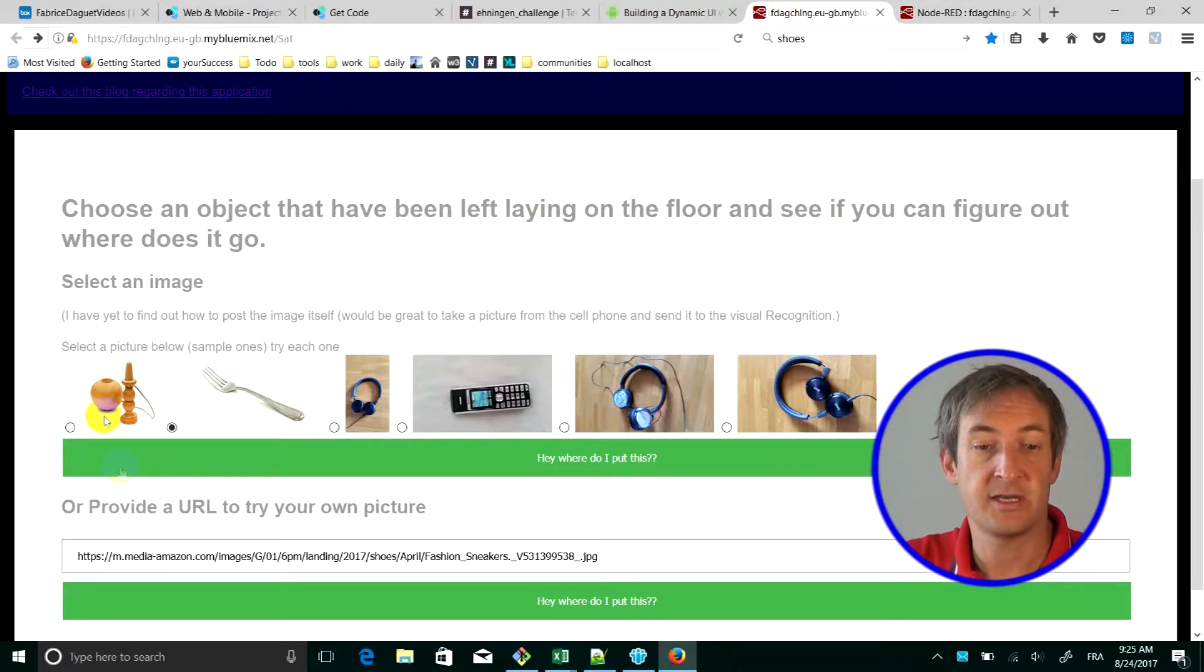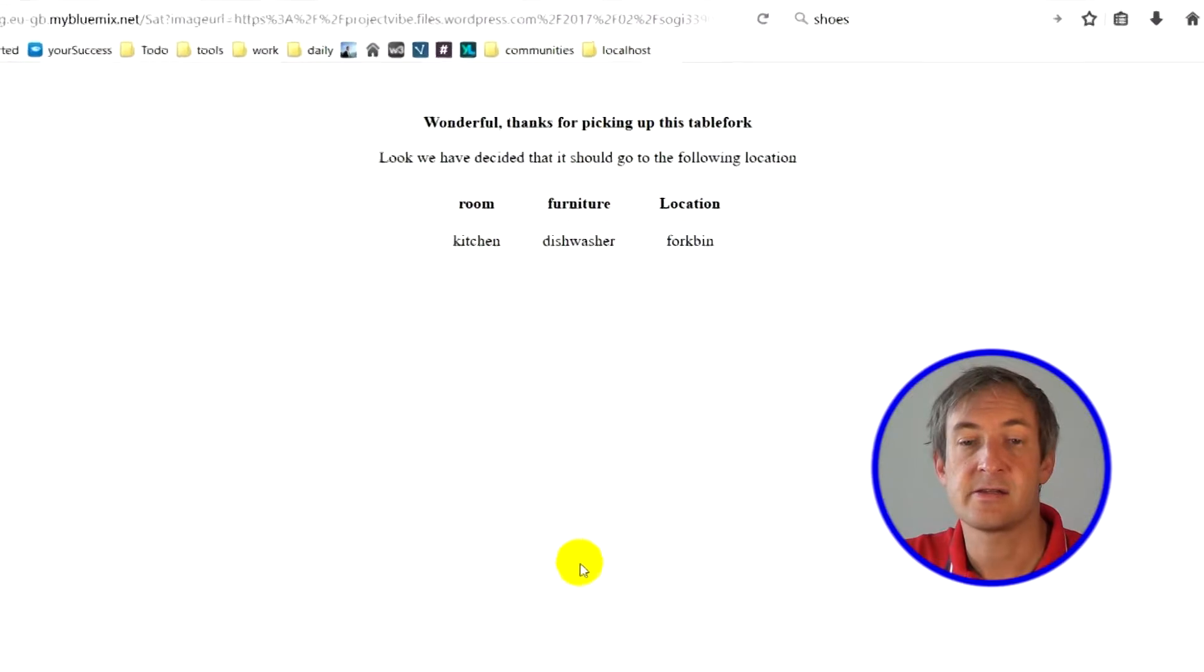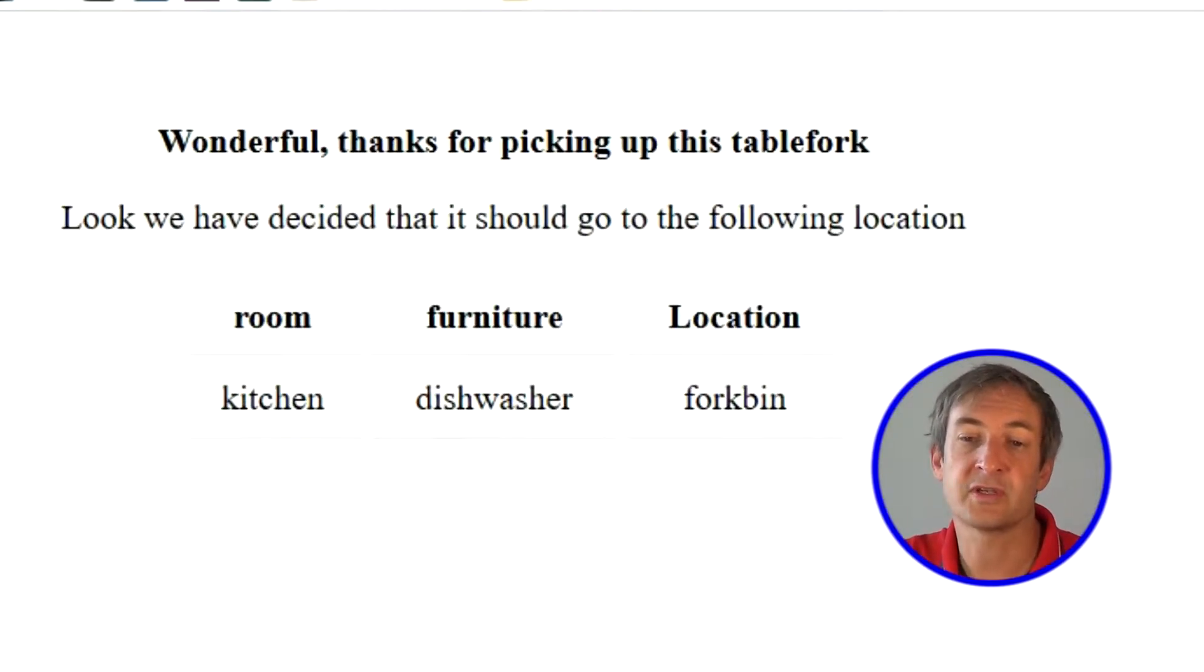Alright, so we choose maybe the first one. We see it's a fork. Let's see what happens. Hey, Watson was able to discover it's a table fork. We even know where to put it. It tells to the kitchen, the dishwasher, the fork bin. Perfect.